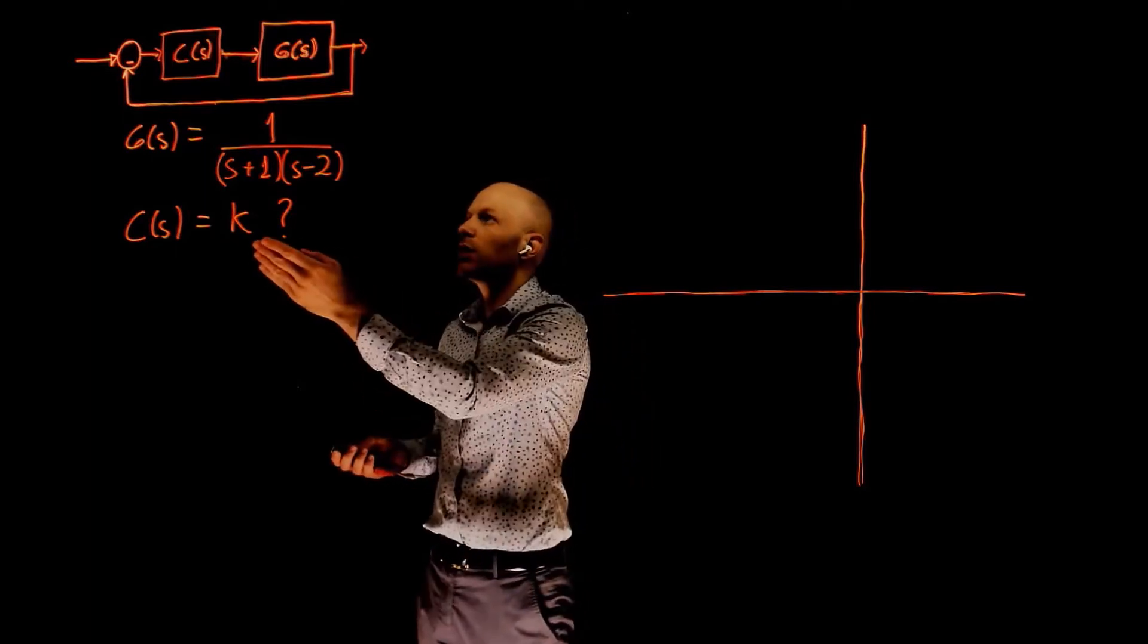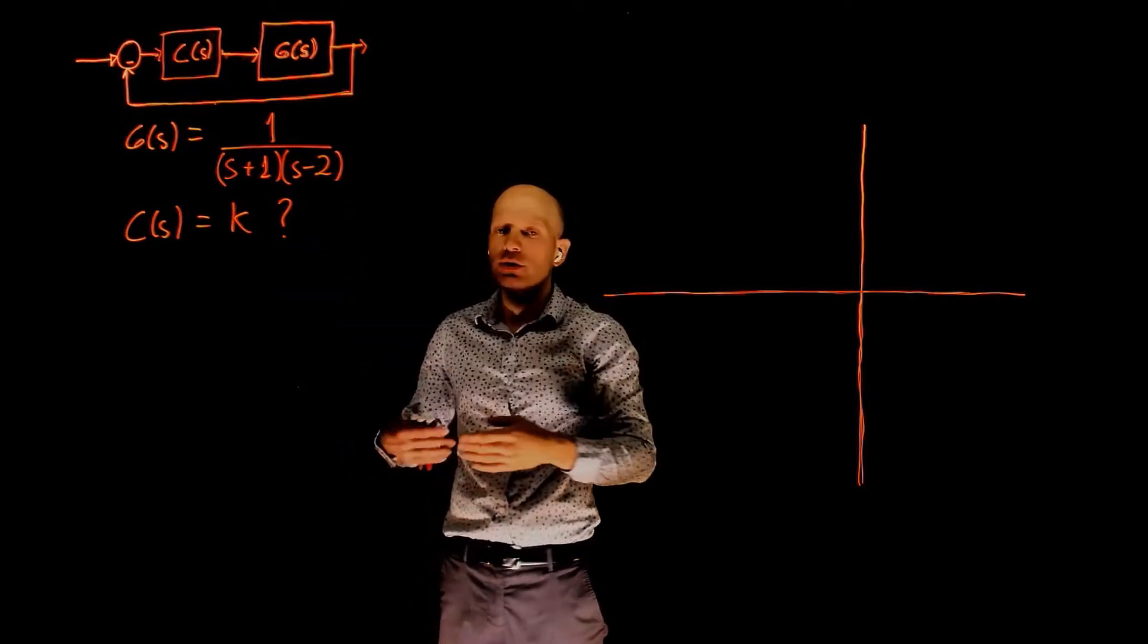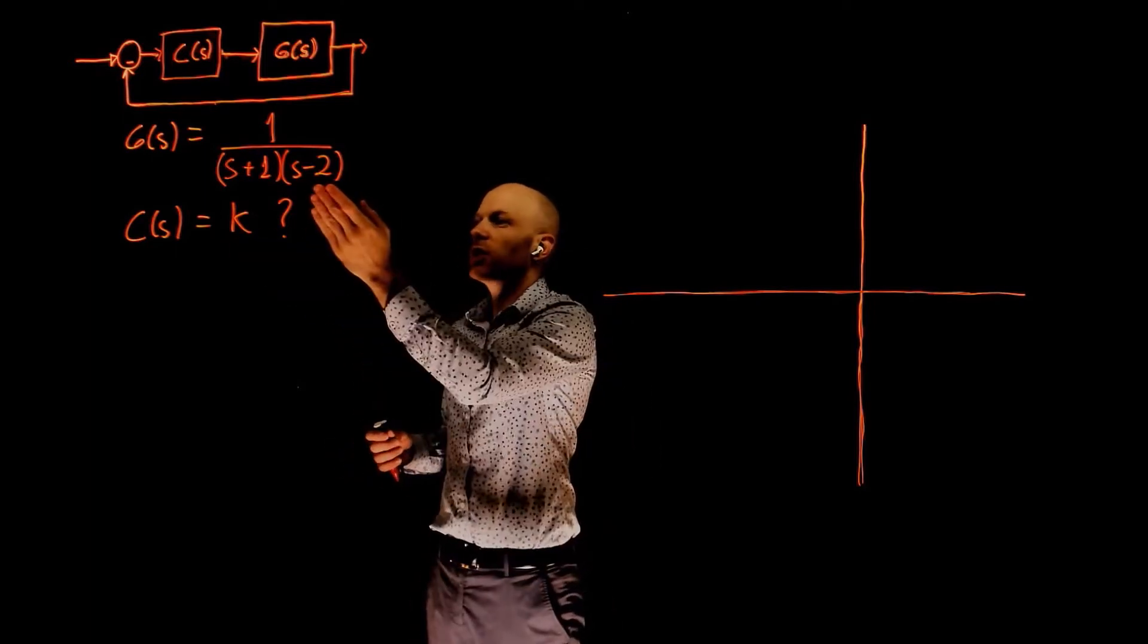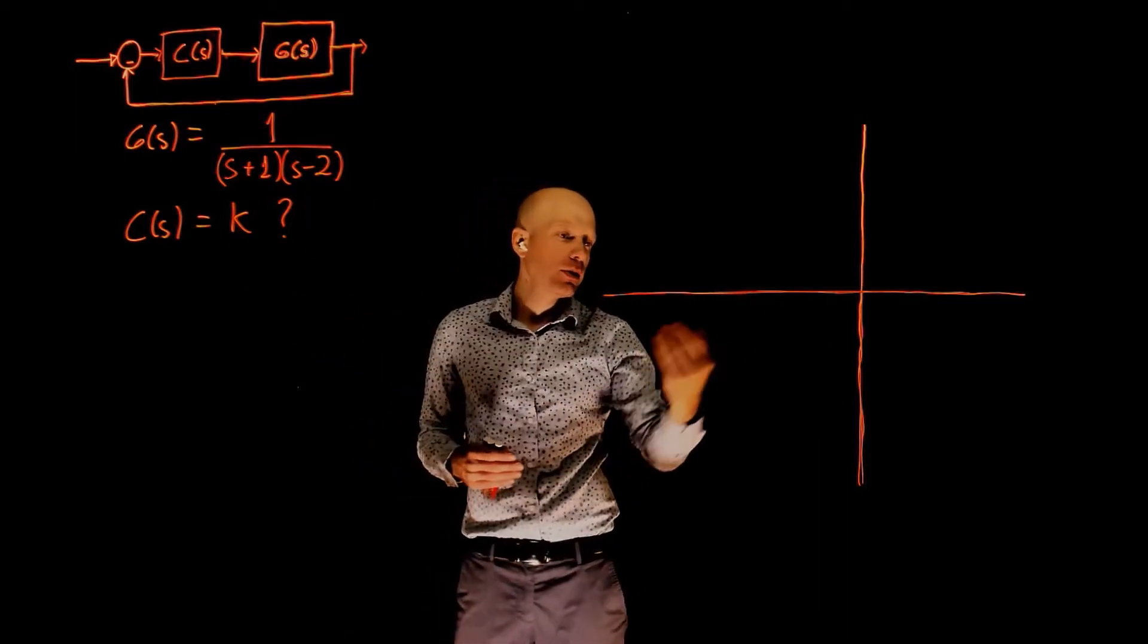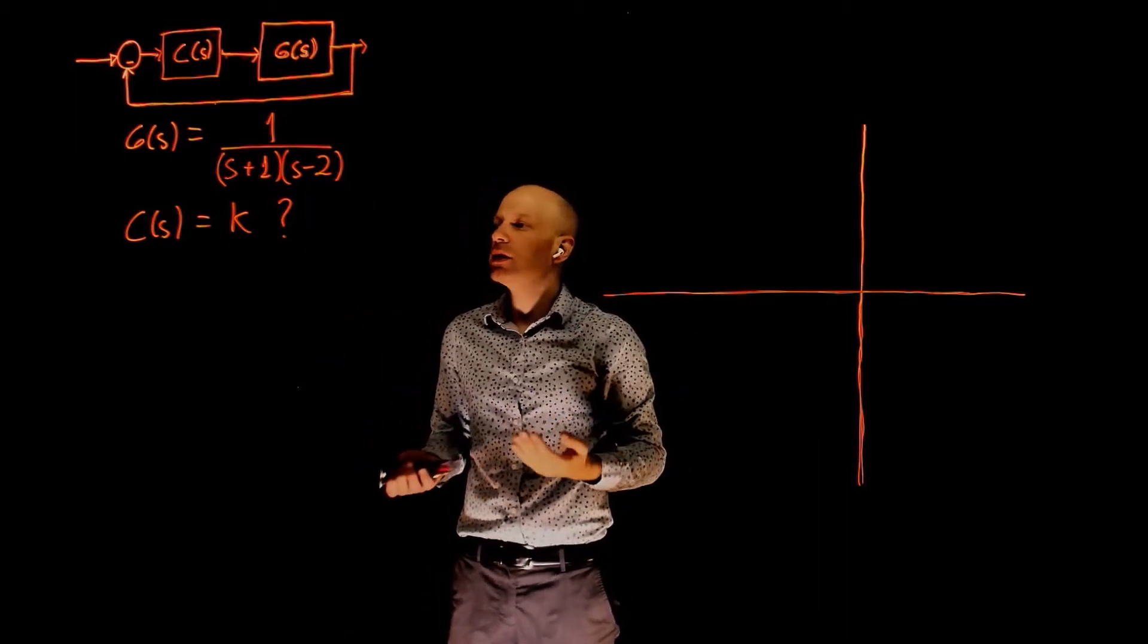The question is, can K stabilize this system? Can a certain value of K make this positive pole come to the stable part of the S-plane and make the system stable?